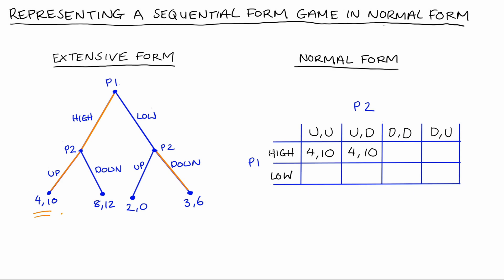If Player 1 plays high and Player 2 plays DD (down if high, down if low), our outcome will be at a different terminal node. Player 1 has played high and Player 2's strategy is to respond to high by playing down, so the payoffs are 8, 12. Lastly, if Player 1 plays high and Player 2 plays DU (down if high, up if low), the outcome is again at that same terminal node, since Player 2 responds to high by playing down, so the payoffs are again 8, 12.